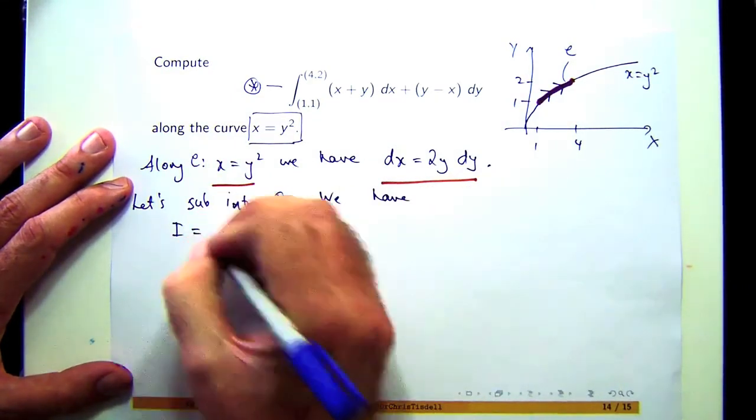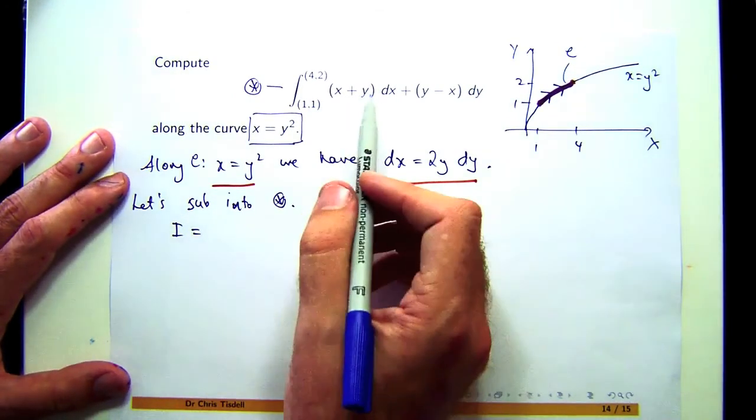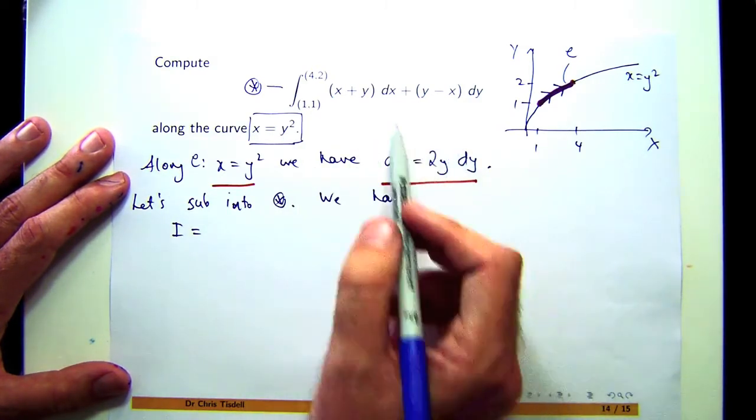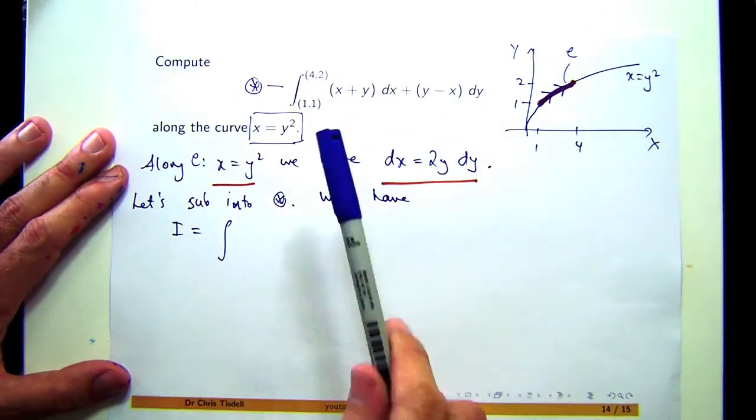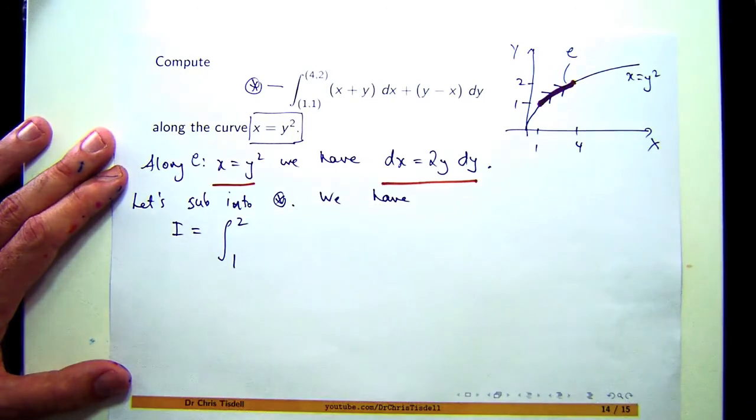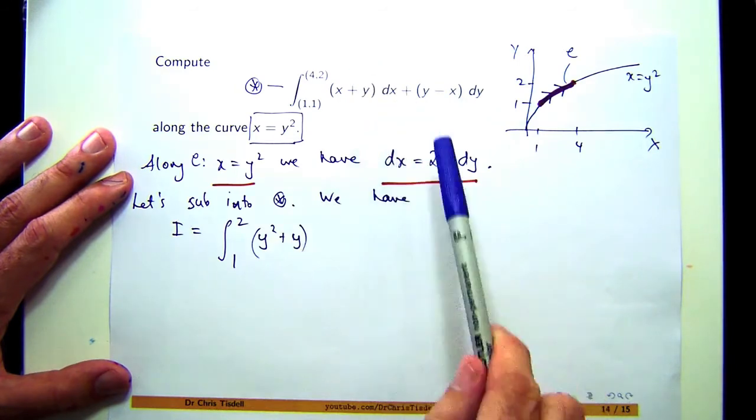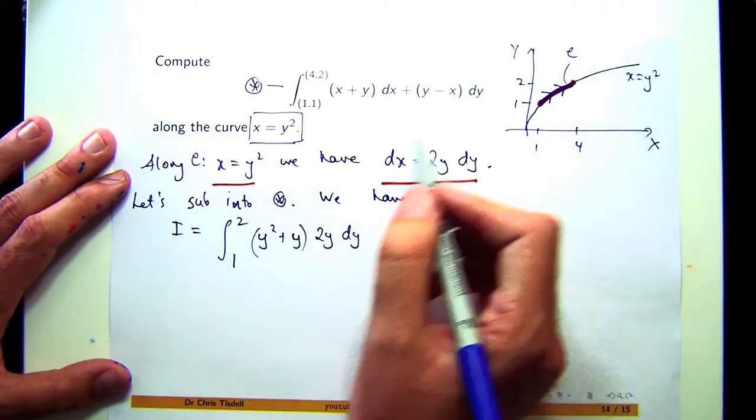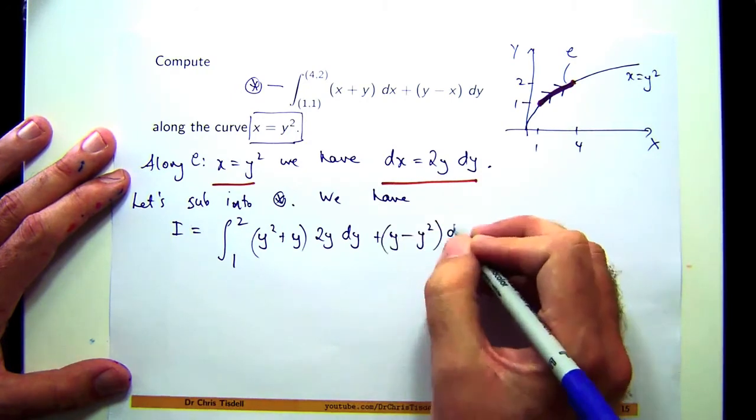So let's call I the value of the integral, whatever it is. I'm going to replace x with y squared, and I'm going to replace dx with 2y dy. So I'm going to get all of this in terms of y only. What that means is I can ignore the first coordinates of that limit of integration and just go with the y coordinates. That dx is going to be replaced by 2y dy. And that x is going to be replaced by y squared.